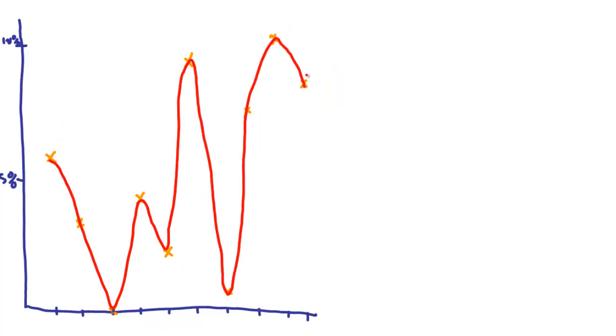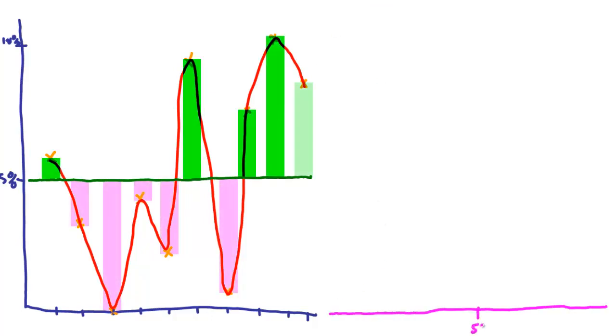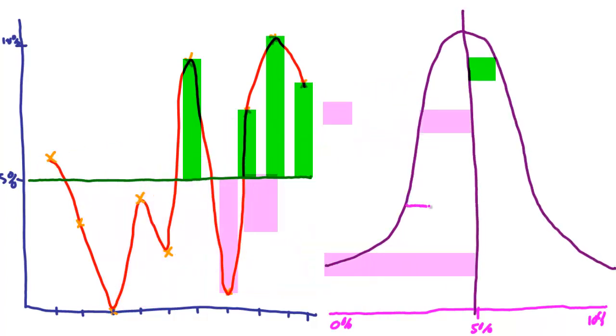That's where the standard deviation comes in. From these returns, we can get an average of 5% and then use the differences between the actual returns and this average to construct a normal distribution.